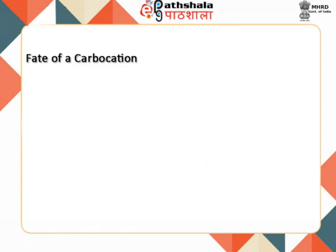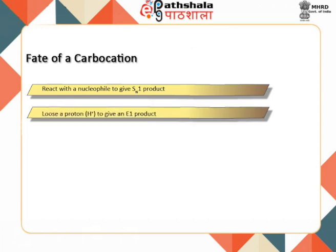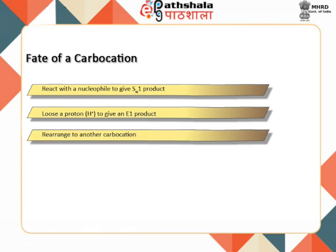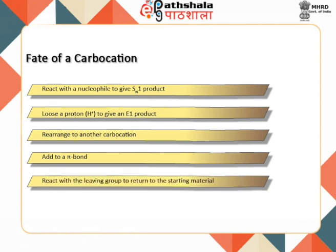Let us now understand what happens to a carbocation during a chemical reaction. As carbocations are most often short-lived, transient species, they react further without being isolated. Once a carbocation is formed, it may react with a nucleophile to give an SN1 product. The carbocation may lose a proton to give an E1 product. It may rearrange to another carbocation, add to a pi bond, or react with a leaving group to return to the starting material.